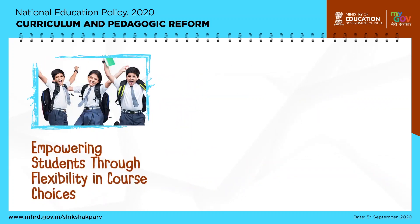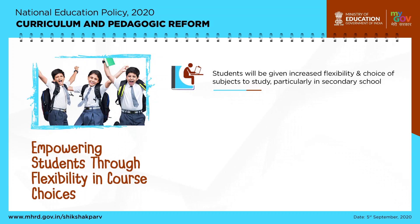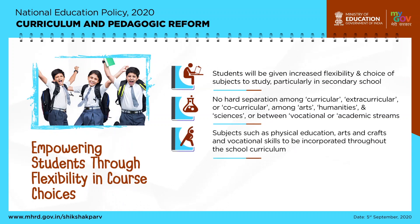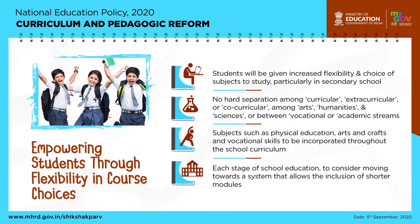Empowering students through flexibility in course choices: students will be given increased flexibility and choice of subjects to study, particularly in secondary schools. There will be no hard separation among curricular, extracurricular, or co-curricular activities, or among arts, humanities, and sciences, or between vocational and academic streams. Subjects such as physical education, arts and crafts, and vocational skills are to be incorporated throughout the school curriculum. Each stage should also consider moving towards a system that allows the inclusion of shorter modules.